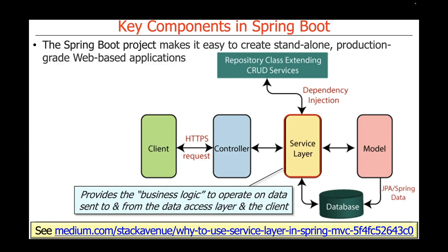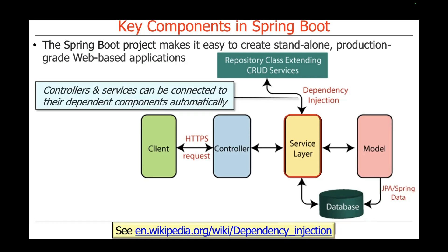What typically happens — and the way I like to do it — is to have something called a service layer. The purpose of the service layer is to separate the business logic of your service or microservice from the controller portion that translates HTTP requests into the methods implementing each request. This allows us to write code that looks like standalone Java code, decoupled from the data access layer and the client. Services typically work through dependency injection, connecting all the pieces together.